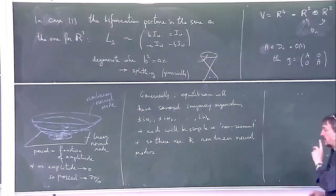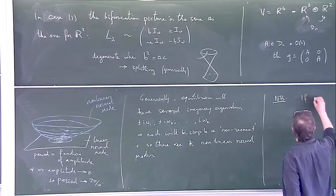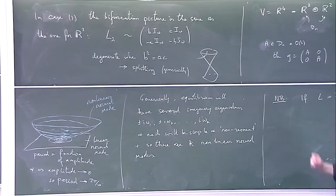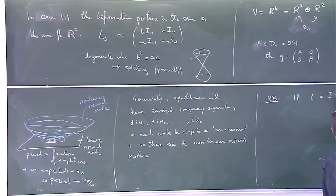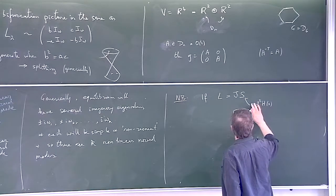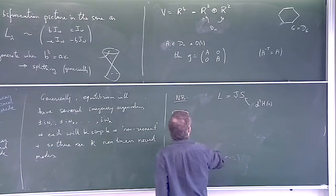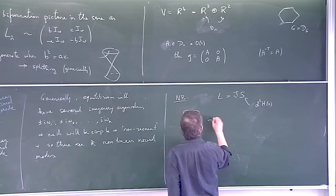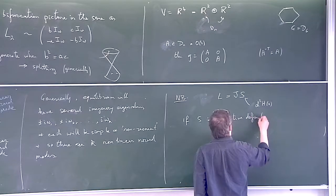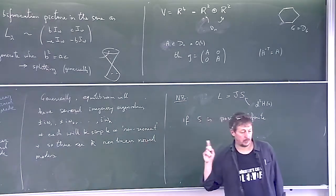So two things I want to say first before we start the symmetry story. A note, important note in all this: L was always J times the symmetric matrix, and this is actually the Hessian matrix. If S is a symmetric matrix, the Hessian is positive definite, so that was the condition Dirichlet Lagrange Dirichlet condition for stability.